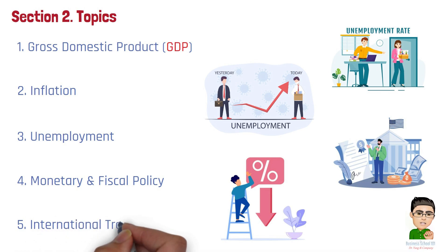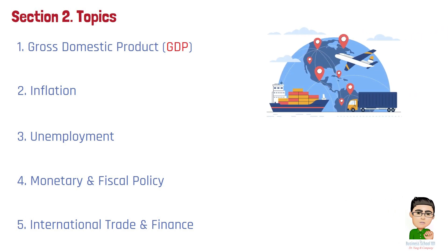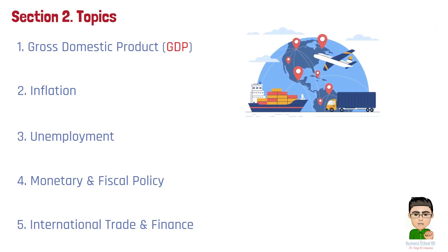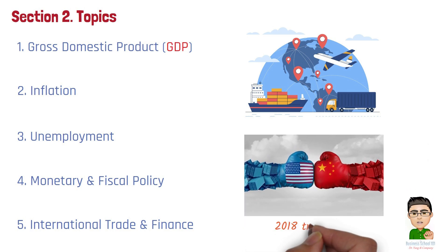Number 5: International Trade and Finance. This topic explores how trade balances, exchange rates, and global economic conditions impact national economies. It helps in understanding the effects of trade policies, currency fluctuations, and international economic relations. For example, the 2018 trade war between the U.S. and China led to higher tariffs on each other's goods, disrupting global supply chains and increasing costs for imported products, which in turn affected consumer prices and business operations.